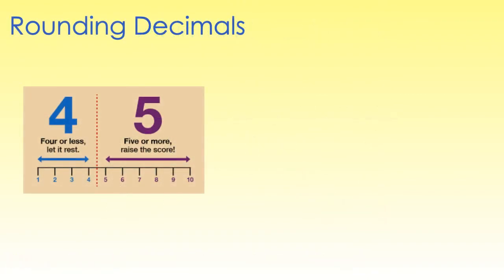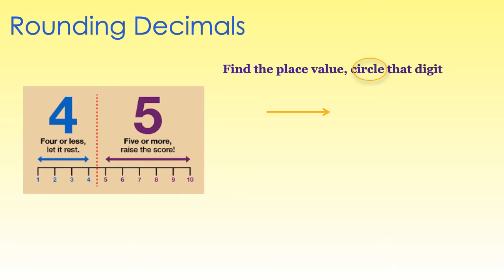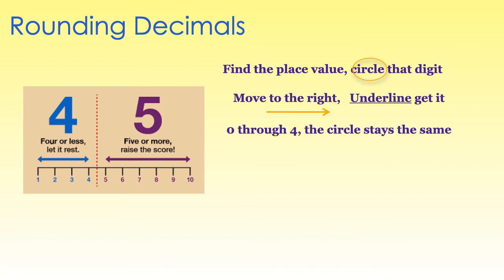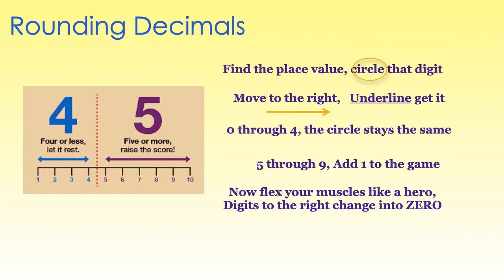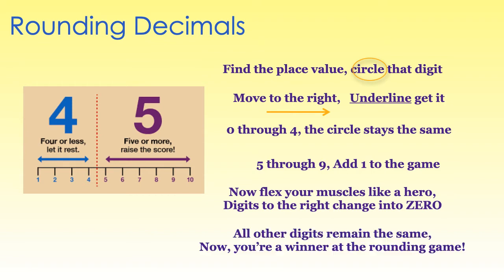The steps for rounding decimal numbers are the same as rounding whole numbers. Do you remember our whole number rounding rap? Let's quickly review. It goes something like this: Find the place value, circle that digit. Move to the right and underline it. Zero through four, the circle stays the same. Five through nine, add one to the game. Now flex your muscles like a hero — digits to the right change into zero. All the other digits remain the same. Now you're a winner at the rounding game.